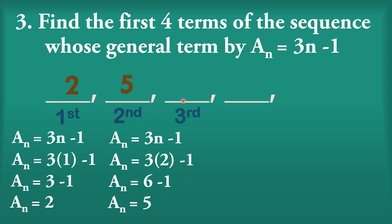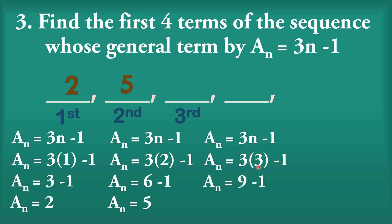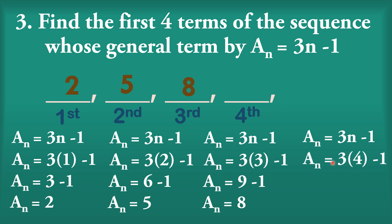Third term: replace n by 3. So 3 times 3 minus 1 gives 9 minus 1, which equals 8. Fourth term: replace n by 4. So 3 times 4 minus 1 gives 12 minus 1, which equals 11. The first four terms are 2, 5, 8, and 11. The pattern from 5, 8, 11 shows the number added is 3: 2 plus 3 is 5, 5 plus 3 is 8, 8 plus 3 is 11.